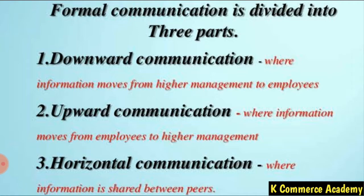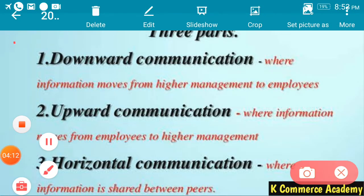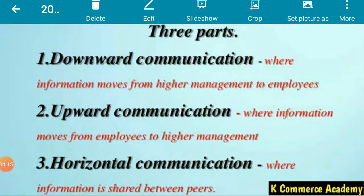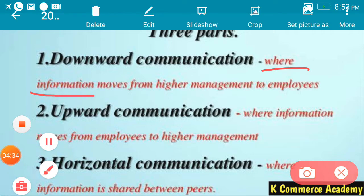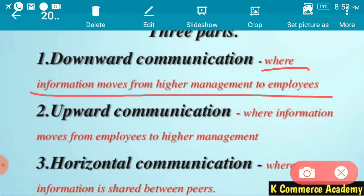Now, formal communication is further divided into four parts — we will study three first, and the fourth one separately. The first type is downward communication. When any instruction or order is given by the superior to the subordinate, it is known as downward communication — where information moves from higher management to employees. When a general manager gives an order to his subordinate, that is downward communication.